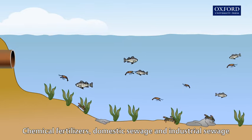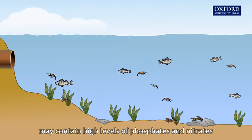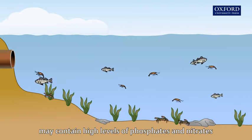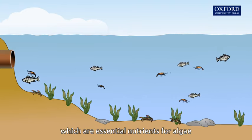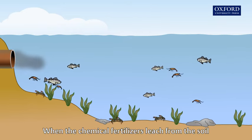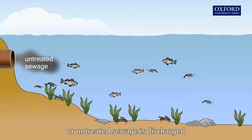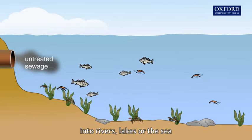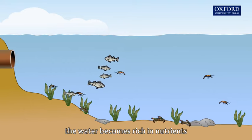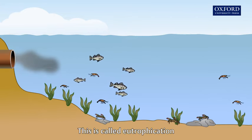Chemical fertilizers, domestic sewage and industrial sewage may contain high levels of phosphates and nitrates, which are essential nutrients for algae. When chemical fertilizers leach from the soil or untreated sewage is discharged into rivers, lakes or the sea, the water becomes rich in nutrients. This is called eutrophication.